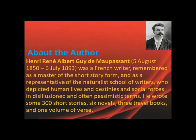Guy de Maupassant was a French writer remembered as a master of the short story form and as a representative of the naturalist school of writers, who depicted human lives, destinies, and social forces in disillusioned and often pessimistic terms. He wrote some 300 short stories, 6 novels, 3 travel books, and 1 volume of verse. He belonged to the naturalist school of writers.